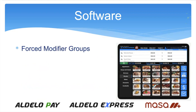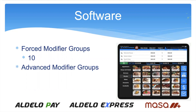We now have force modifiers — these are modifiers where you select the temperature of a steak, for example. These are modifier groups that are required before entering the item. You can have up to 10 of those, but each of those 10 has no limit to how many modifiers you can include in each group. Advanced modifiers — the options and sides — you can have up to eight of those, and again, each one has an unlimited number within those groups.